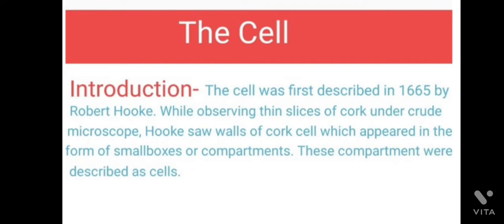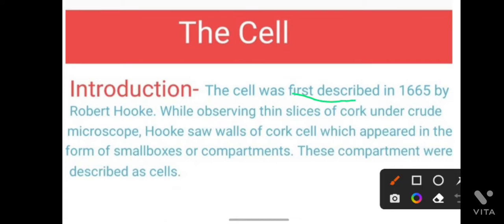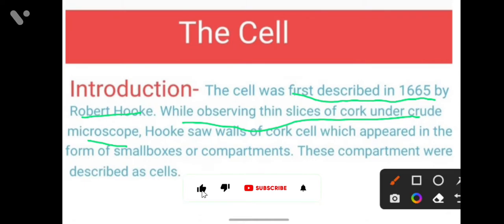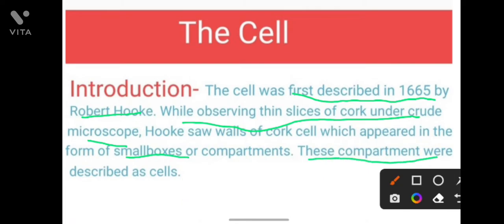First of all, we will give the cell introduction. The cell was first described in 1665 by Robert Hooke while observing thin slices of cork under a crude microscope. Hooke saw walls of cork cells which appeared in the form of small boxes or compartments. Robert Hooke saw the cell first, and he saw cork slices.